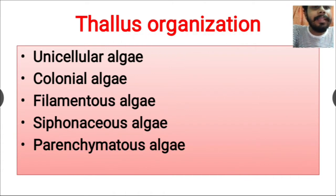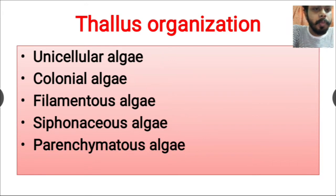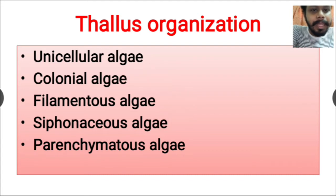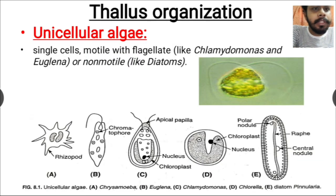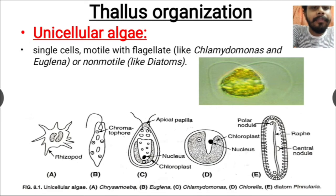Depending on the thallus organization or thallus structure, algae are differentiated into five groups: unicellular algae, colonial algae, filamentous algae, siphonaceous algae, and parenchymatous algae. First is unicellular algae, which means they have a single cell.